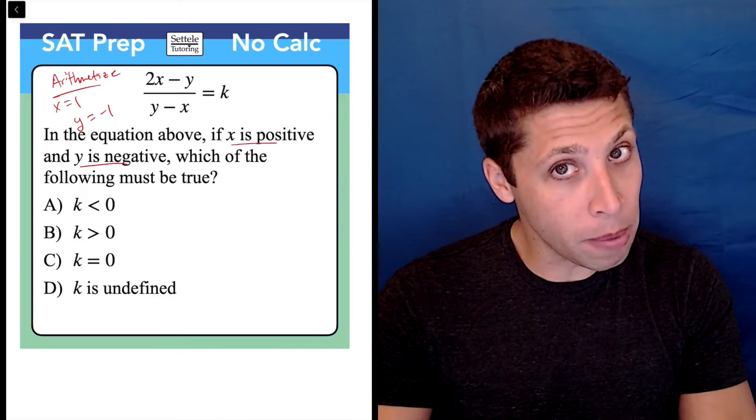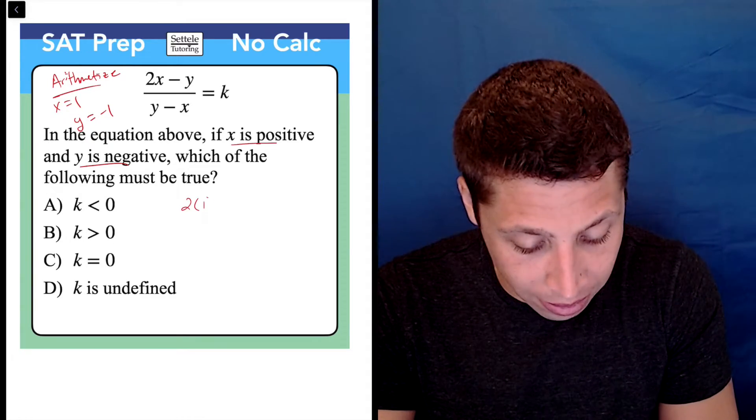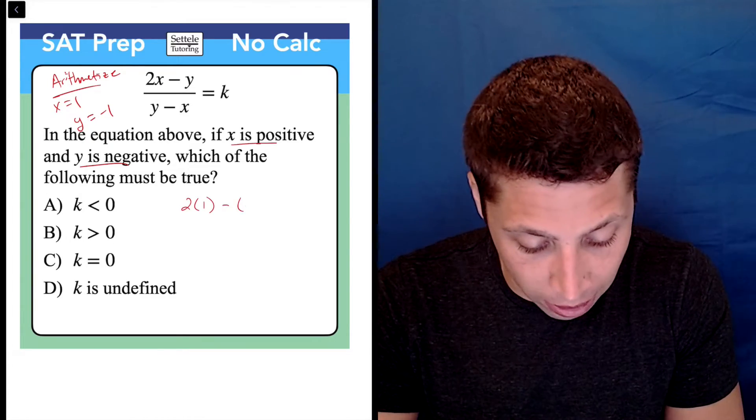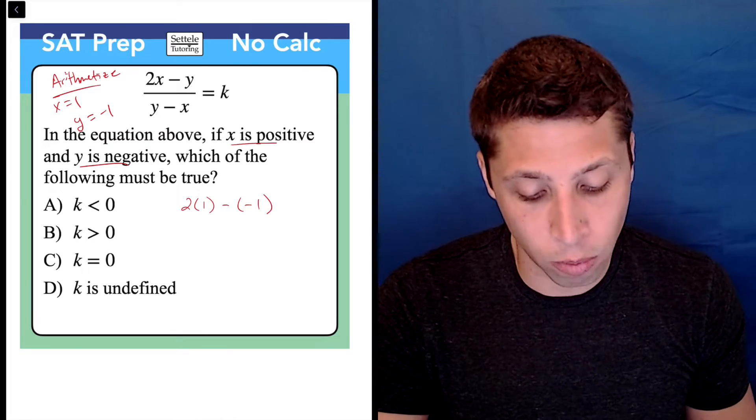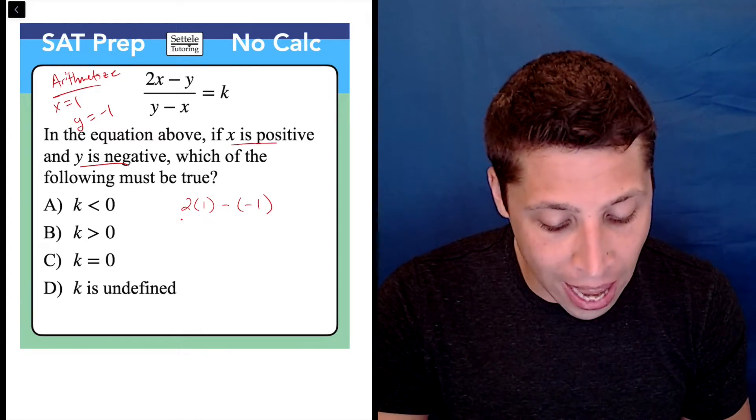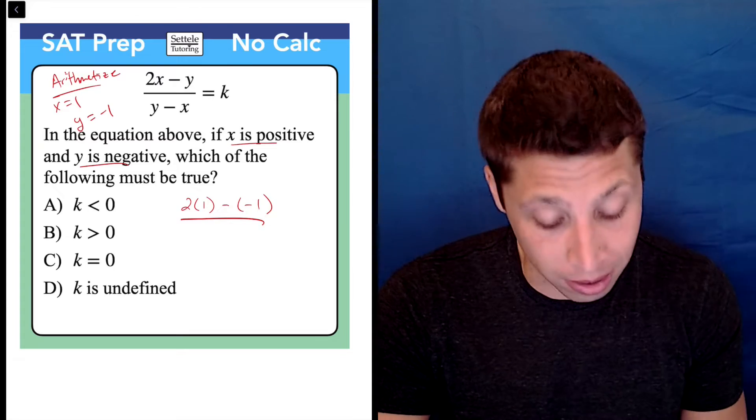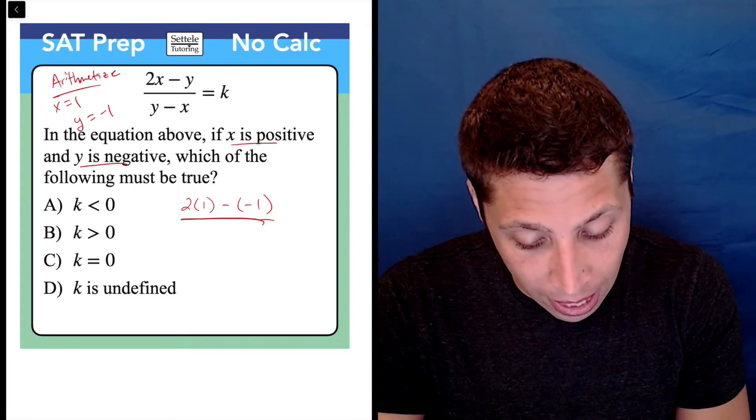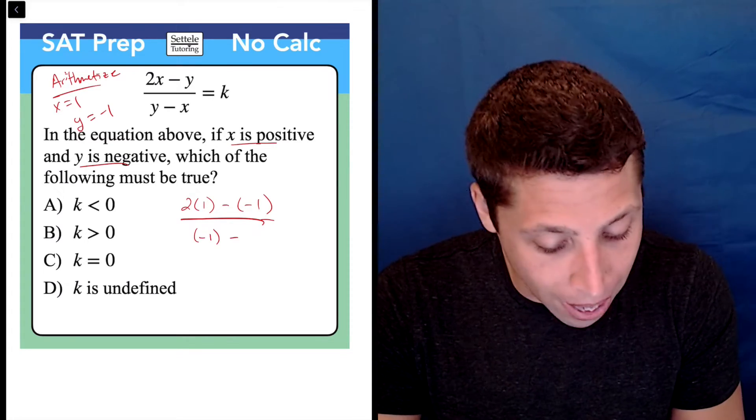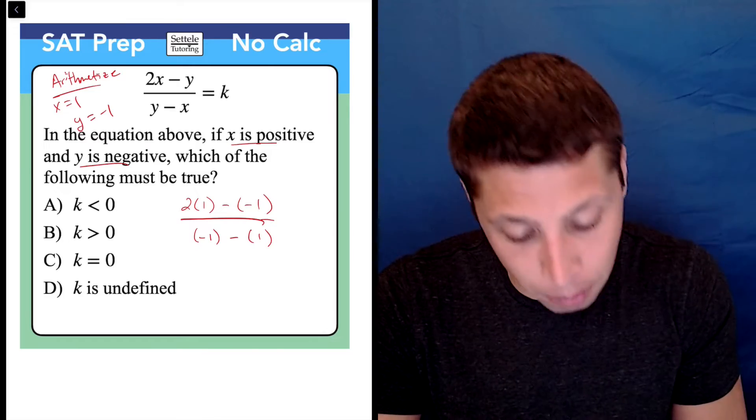Now I've got to really be careful though, because if I lose a negative, that doesn't mean that I'm going to get the arithmetize right. I need to make sure that I'm putting things where they're supposed to go. So one is the value of x. Negative one is the value of y. I'm going to put that in parentheses, so don't lose the negative. And then again, negative one minus positive one, put that in parentheses too.